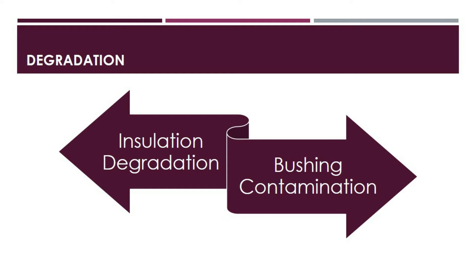The electrical loading profiles and the length of the transformer's service life have an impact on its asset life. Other factors, including mechanical damage, salt exposure, and voltage and current spikes, also have a significant impact. To assess the useful remaining life of distribution transformers, a mix of condition, age, and load-based criteria is frequently used.